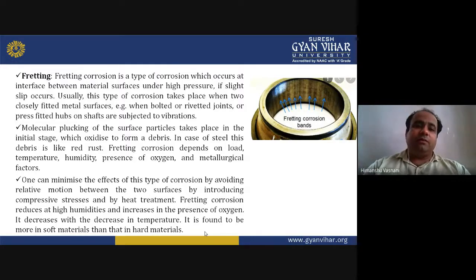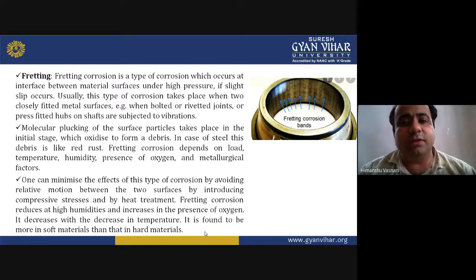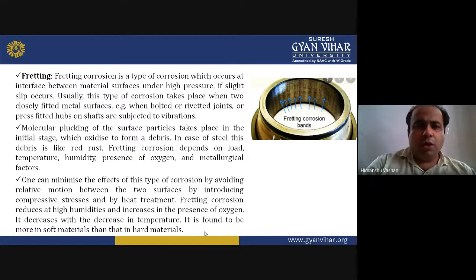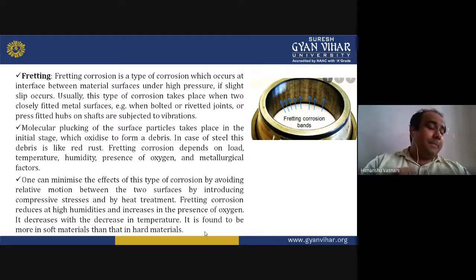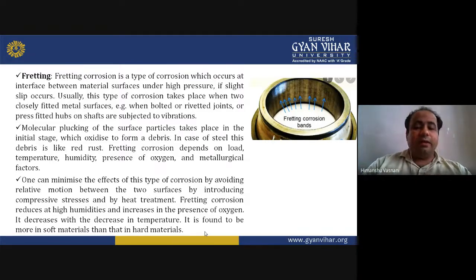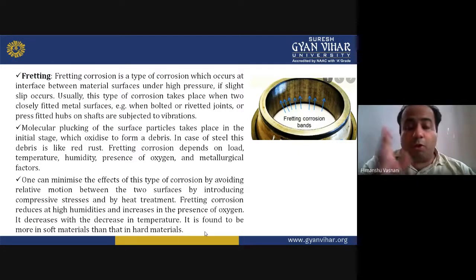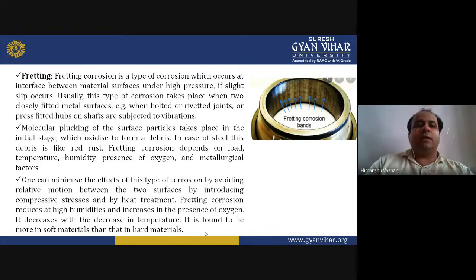Fretting corrosion occurs when two closely fitted metal surfaces — such as bolted or riveted joints, or press-fitted shafts — are submitted to vibrations. Molecular plucking of the surface particles takes place in the initial stage, which oxidizes to form a debris.